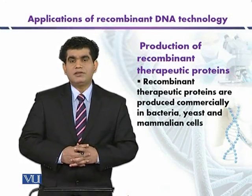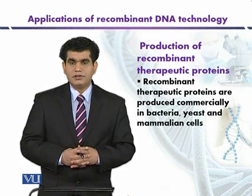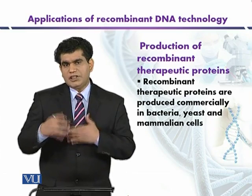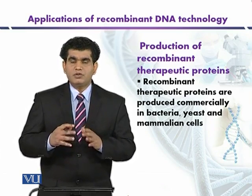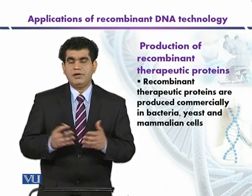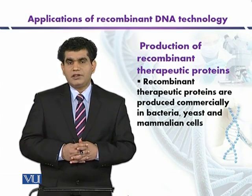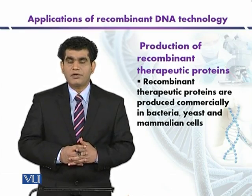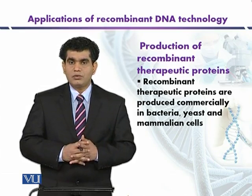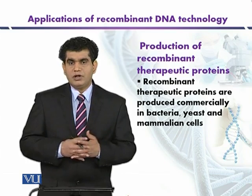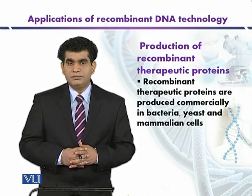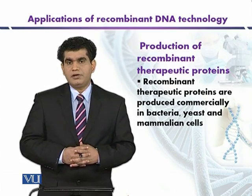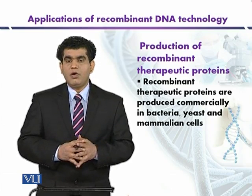Production of recombinant therapeutic proteins. We have already discussed that such types of products can be produced by using bacteria, animals, or plants. Among the first examples produced by using transgenic living organisms, we can quote the example of growth hormones and insulin — different types of human hormones obtained by using such living organisms.